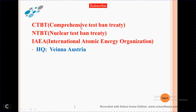CTBT stands for Comprehensive Nuclear Test Ban Treaty. NTBT stands for Nuclear Test Ban Treaty. And IAEA stands for International Atomic Energy Agency. Headquarters in Vienna, Austria.